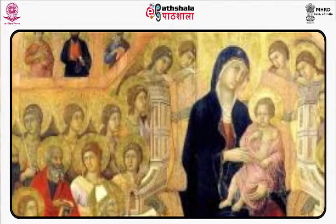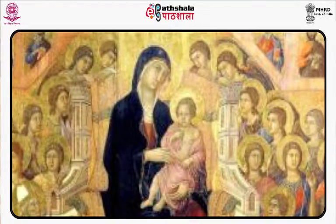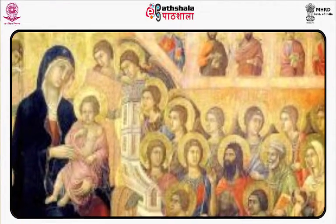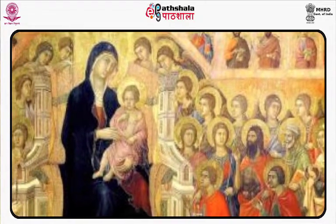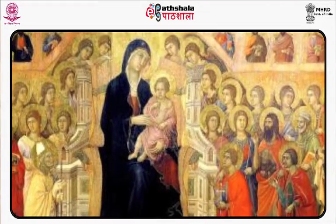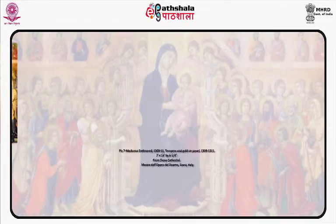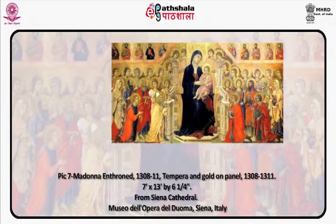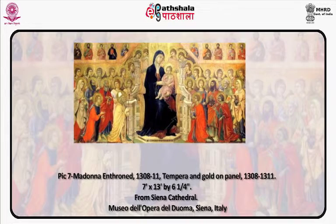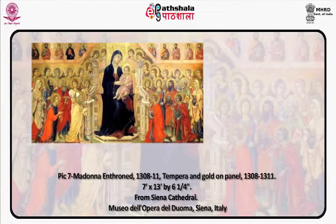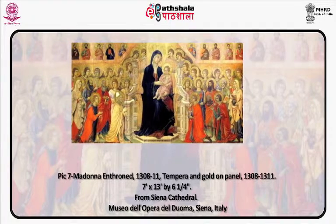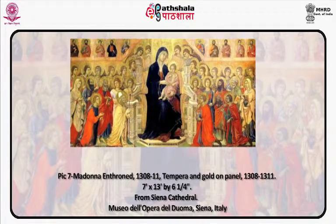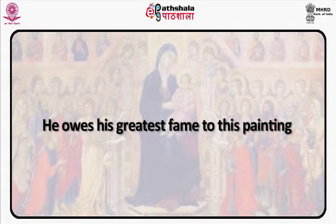Here we see one of Duccio's famous paintings, Picture 7, Madonna Enthroned, 1308 to 1311, painted in tempera and gold on a panel. Madonna Enthroned — the altarpiece of the main altar of the Cathedral of Siena — began to change the Byzantine art style. The linear angular quality of the draperies became softer, revealing the figure underneath. Faces, hands and bodies became more rounded, and a three-dimensional treatment of space is a little more evident. There even seems to be a show of tender expression towards the child Christ. He owes his greatest fame to this painting.